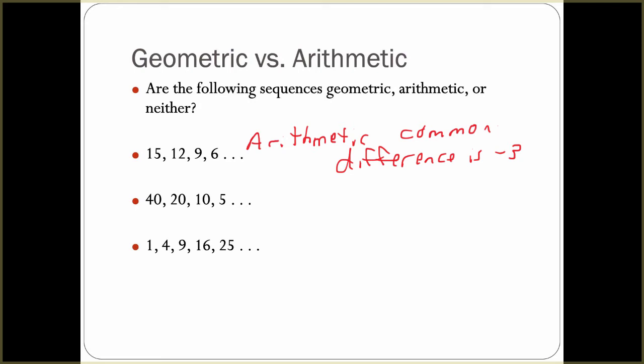Remember how we do that is we have 20 over 40, which is 1/2. We have 10 over 20, which is 1/2, and 5 over 10, which is 1/2.